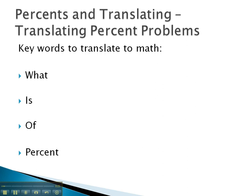There are four key words that we're going to look at here today. The first is the word what. We use what when we don't know what we're talking about, and in math when you don't know what we're talking about, that's our variable or our x.